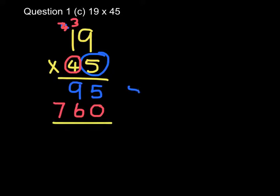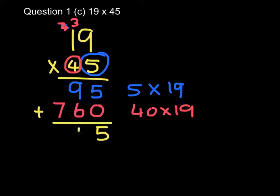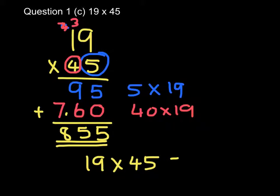Again, this is the answer for 5 times 19, and this is the answer for 40 times 19. So when I add them together, I will get the answer for 45 times 19. So 9 add 6 is 15, 7 add 1 is 8. So I get 855, which means 19 times 45 equals 855.